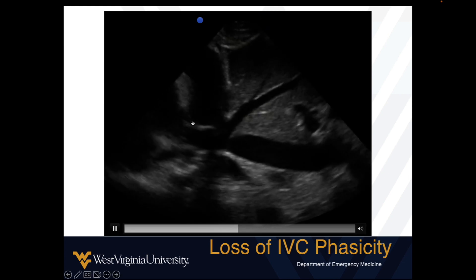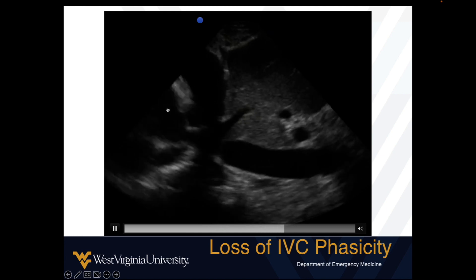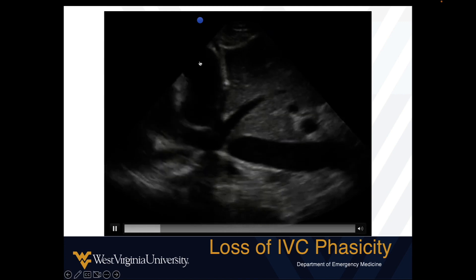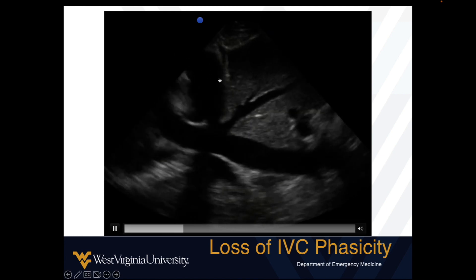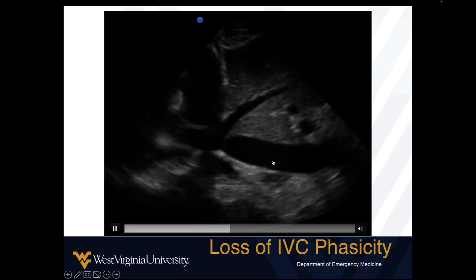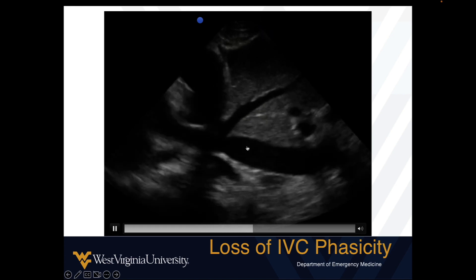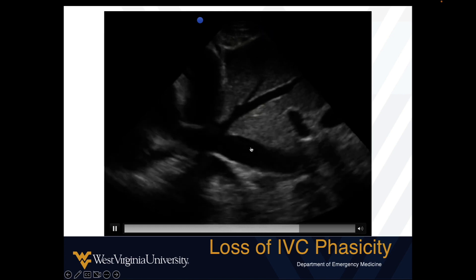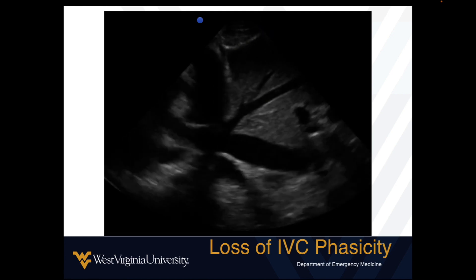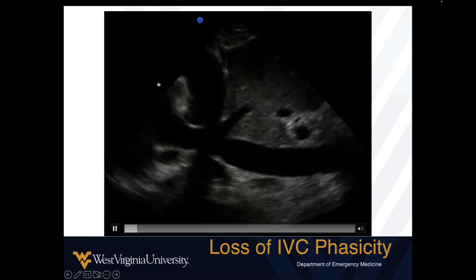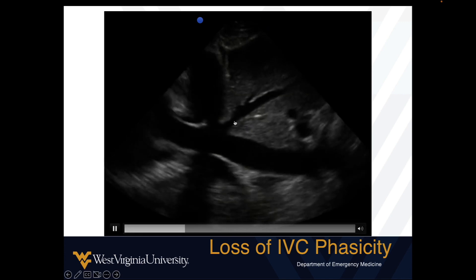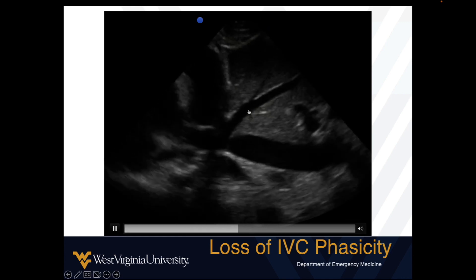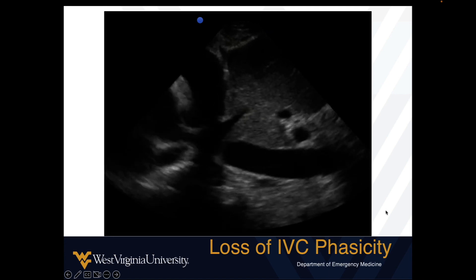This is a case of tamponade — we see the right atrium and a large effusion causing this patient's shock. The IVC is dilated and does not change shape at all with respiration. We also see that dilation transmitting into a dilated middle hepatic vein.